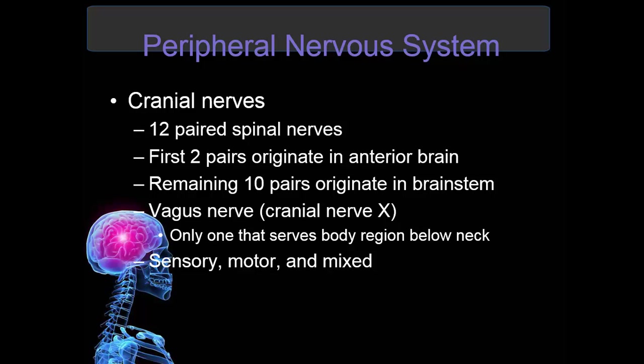Looking at the peripheral nervous system — cranial nerves — there are twelve pairs. The first two pairs originate in the anterior brain and the remaining ten originate in the brain stem. The vagus nerve, which is cranial nerve 10, is the only one that serves body regions below the neck. Each nerve can be sensory, motor, or mixed, meaning they are both sensory and motor.